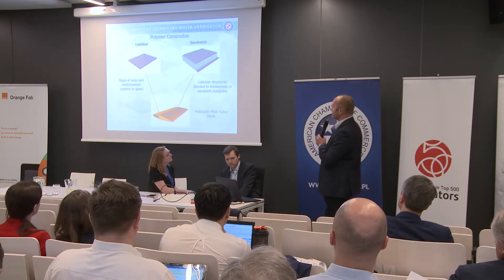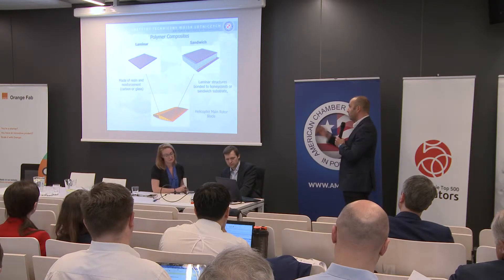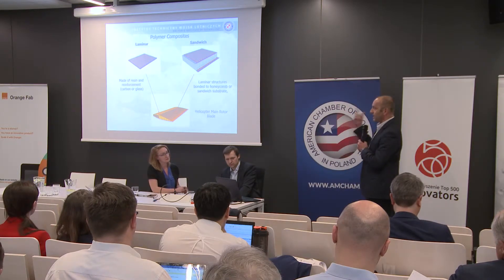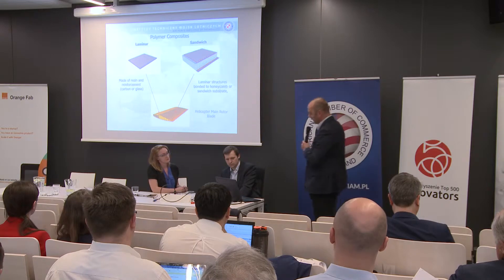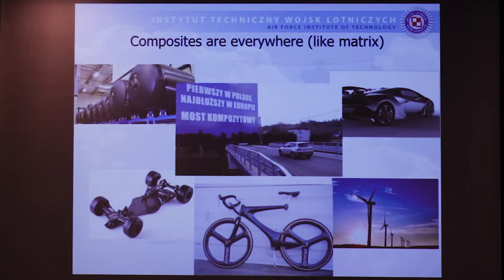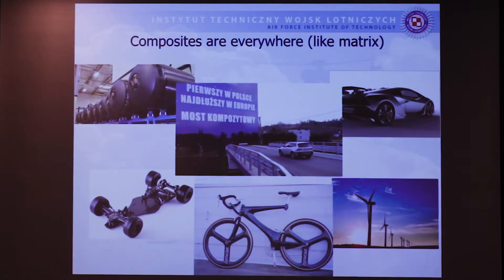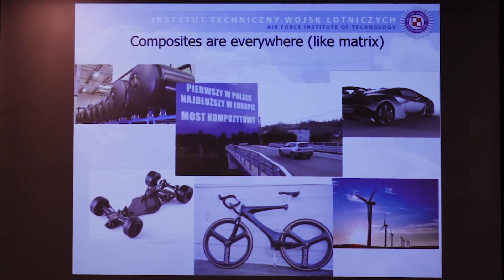The mixture of laminar and sandwich structures you may find, for instance, in helicopter main rotor blades — they are composed of both structure types. Composites are everywhere. You can find them in the energy industry and in modern sports cars, race cars, Formula One.